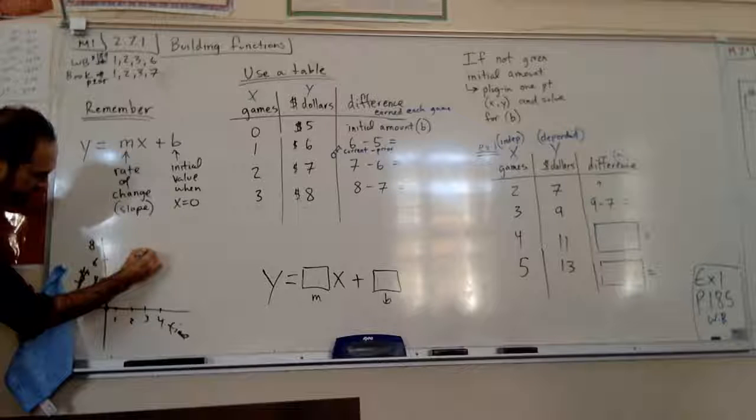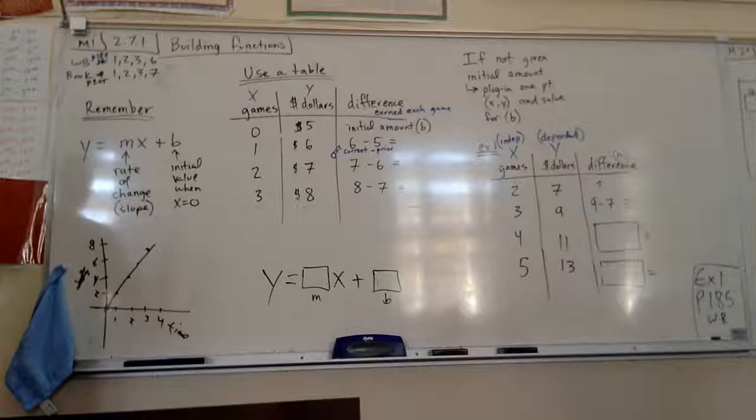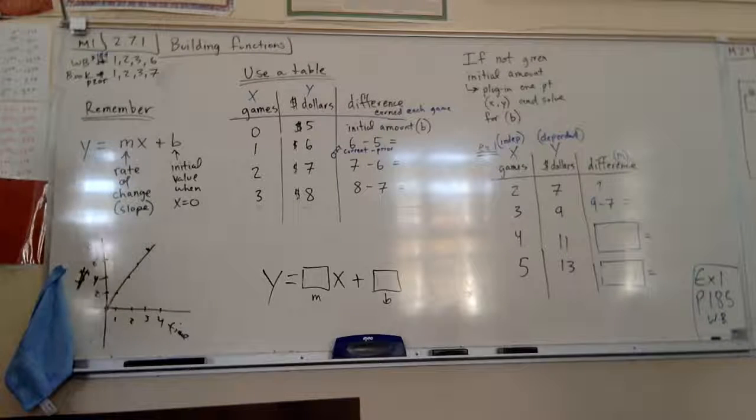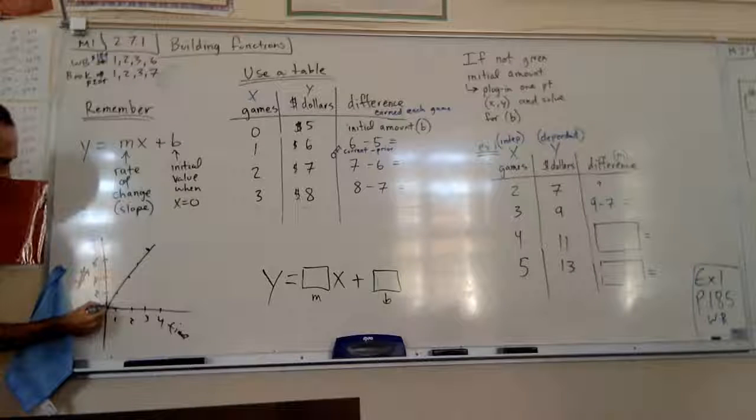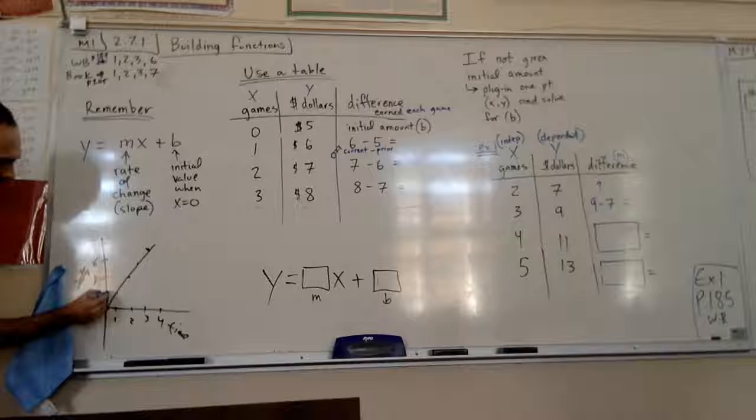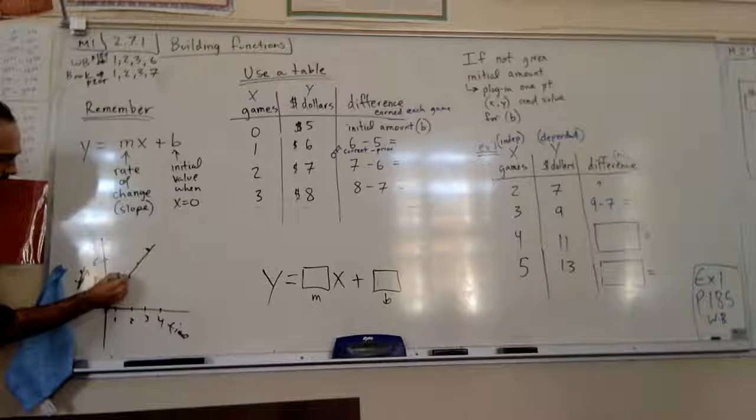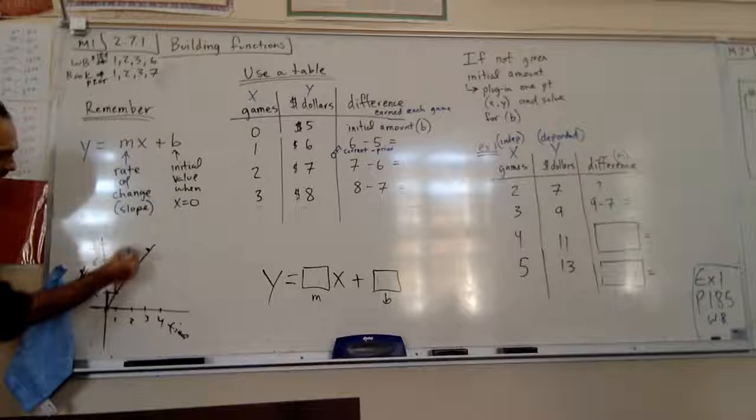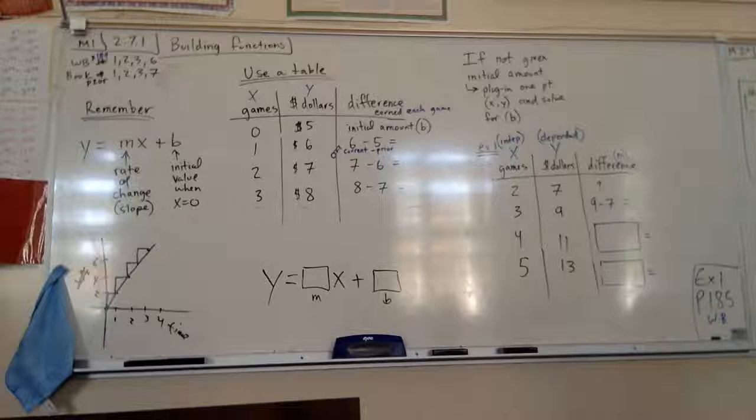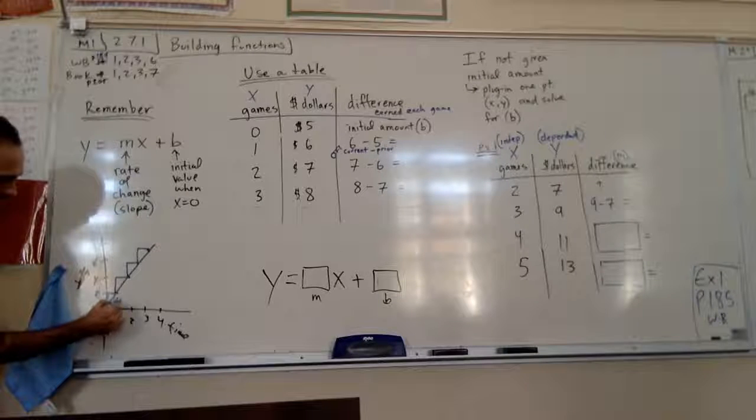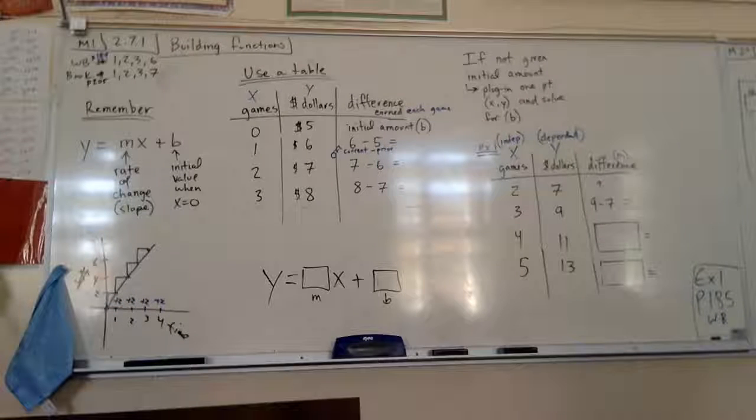Do you see that this is a line? Because the amount that I earn every week doesn't change. So essentially what I have here is a step that goes, okay, from week zero to week one, my slope, my rate of change is up two over one. From two to four, it's up two over one. From four to six bucks, it's up two over one. You see how the steps are the same?